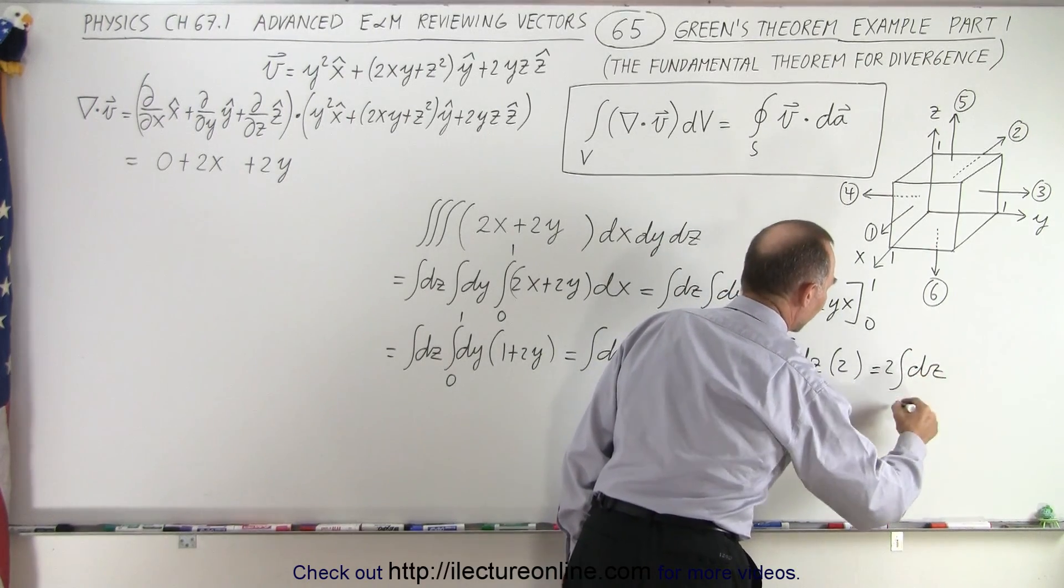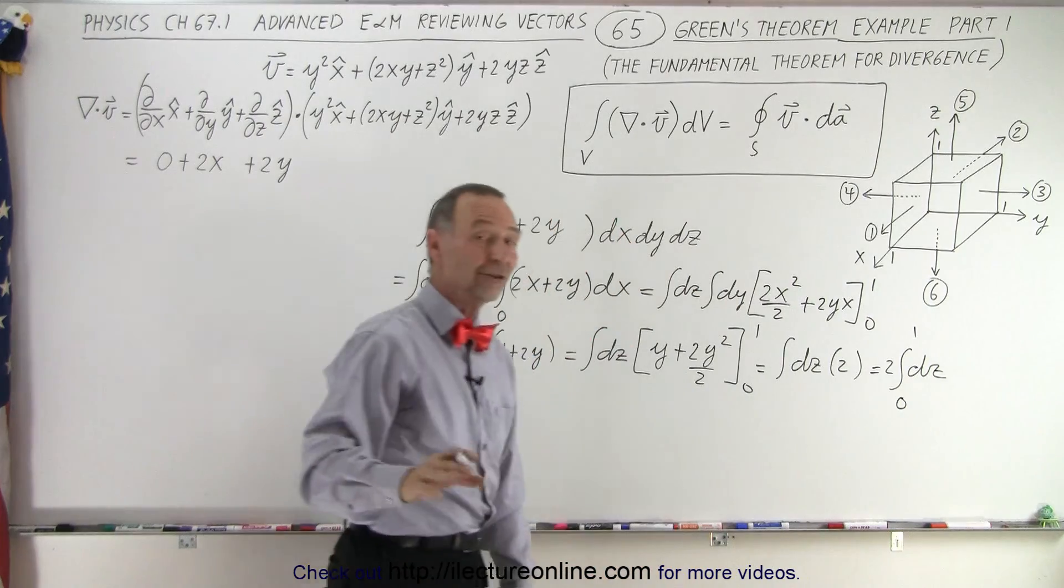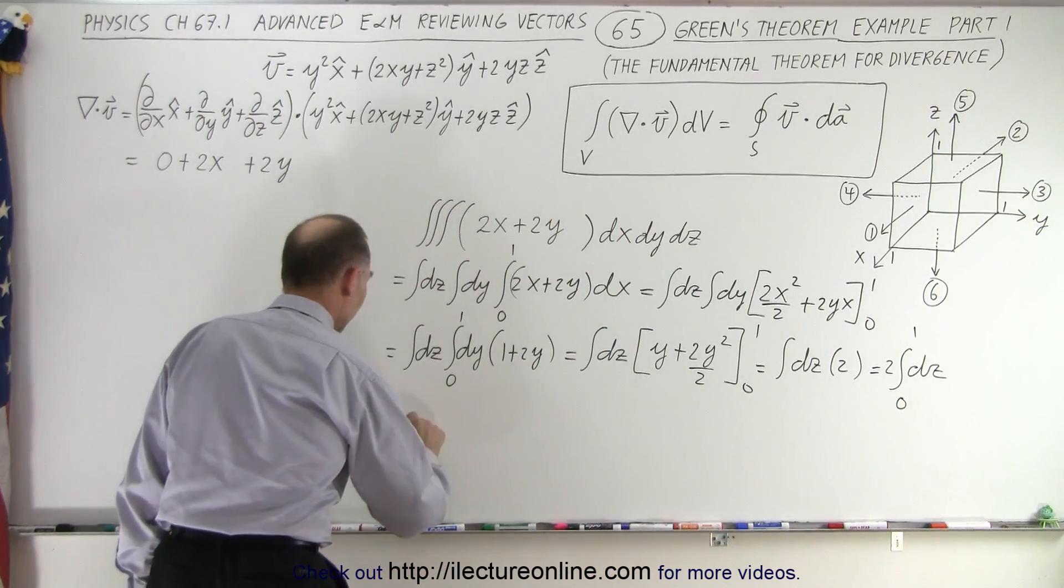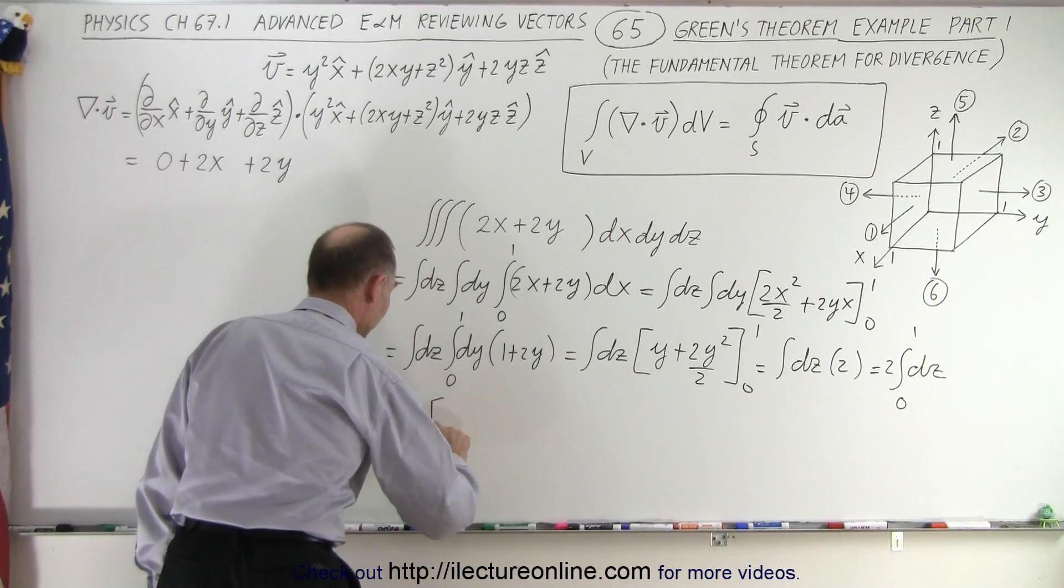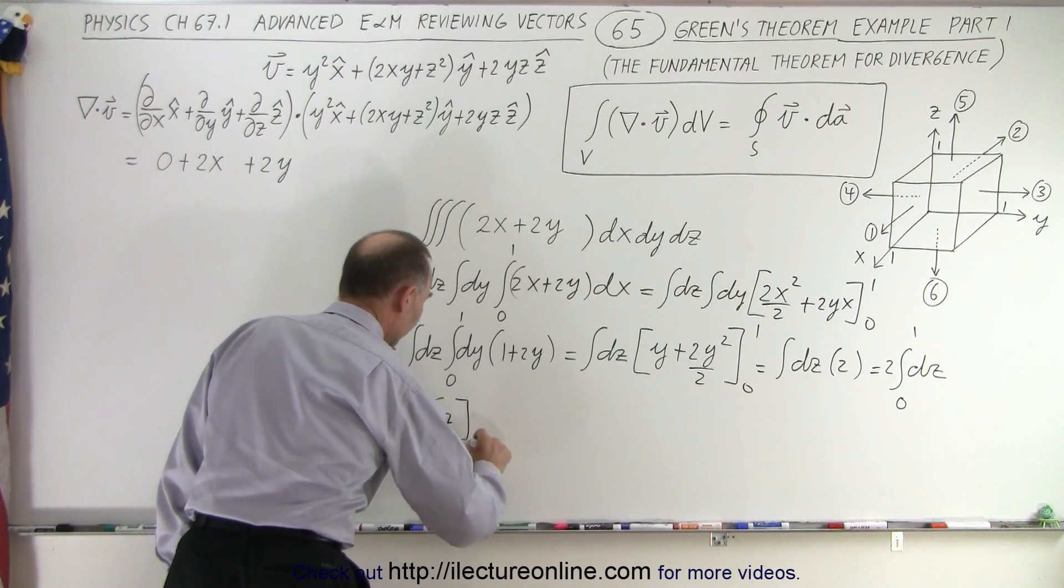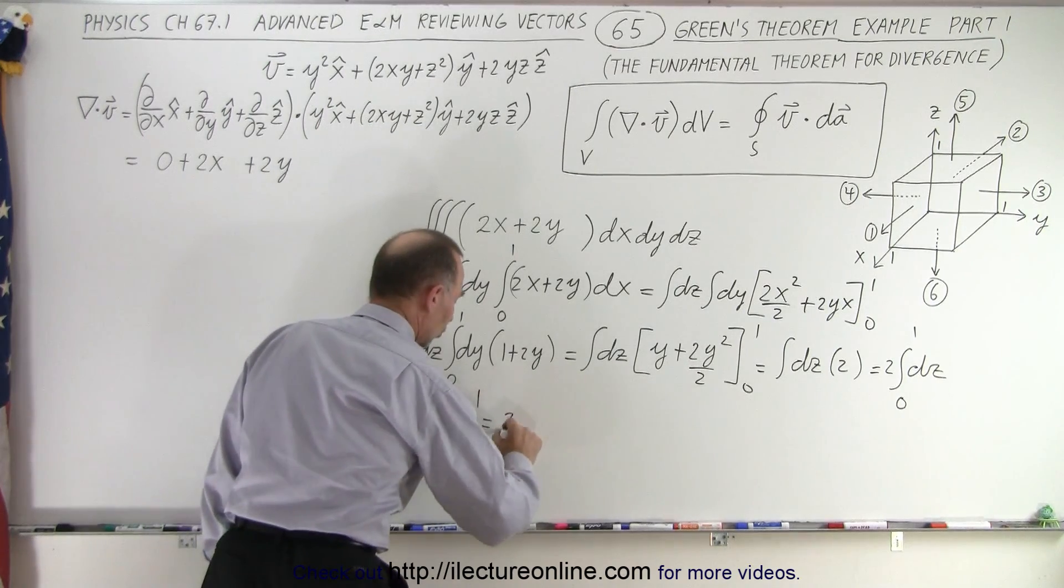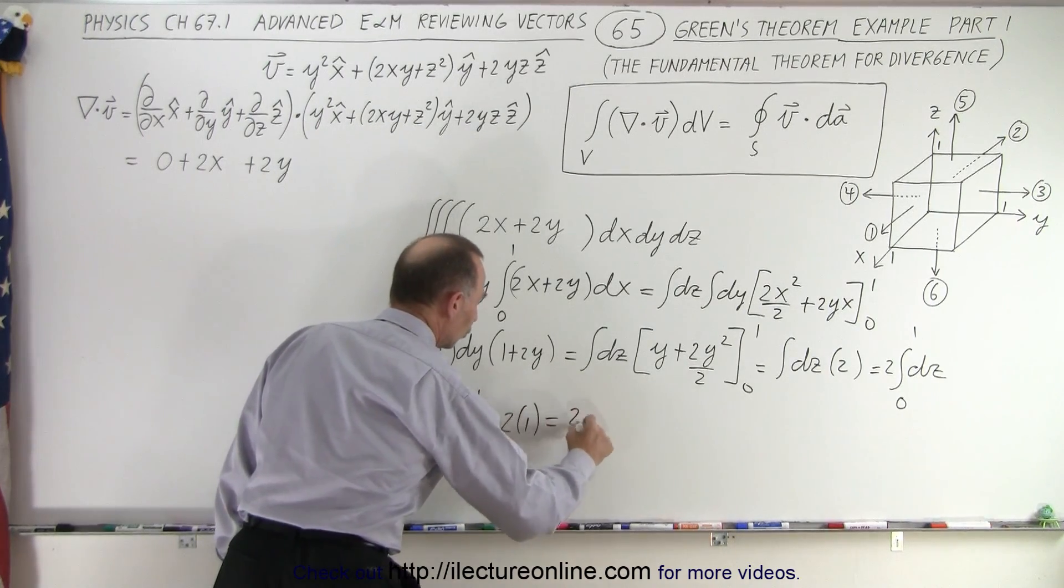2 times the integral of dz from 0 to 1. That you can integrate easily, so this becomes equal to 2 times z evaluated from 0 to 1, which is equal to 2 times 1, which is 2.